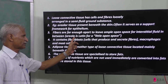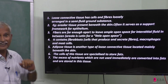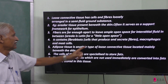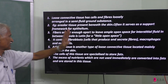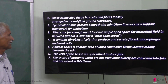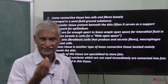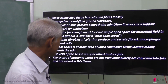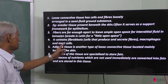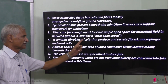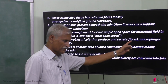Example: Areolar tissue. Areolar tissue means little open space — loosely arranged. It contains fibroblasts, which secrete the fibers, as well as macrophages and mast cells. Fibroblast cells produce and secrete fibers.